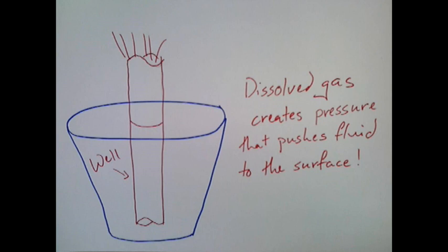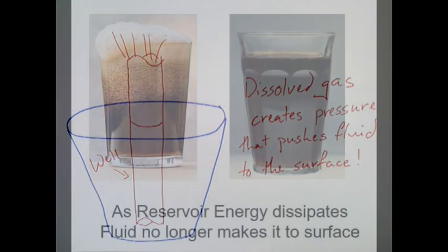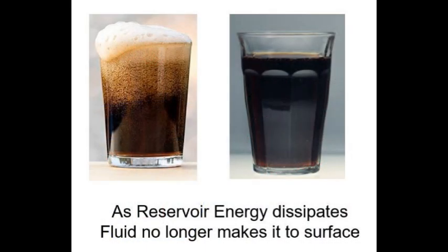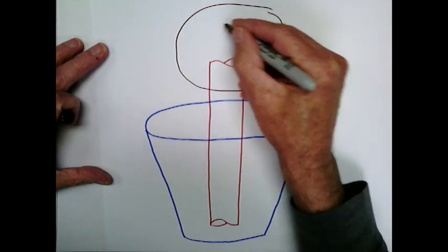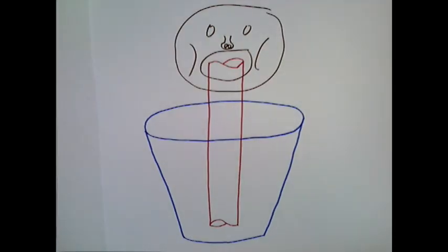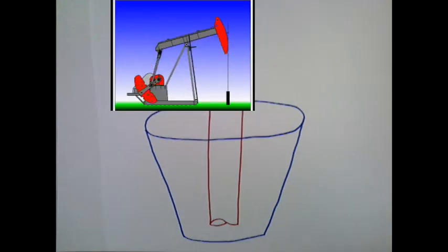Crude oil has the same reservoir energy in the form of dissolved methane and ethane, which when given the chance, convert to the gas phase and push the oil up the well bore. However, as that pressure quickly dissipates, pop no longer comes out of the straw and oil no longer comes to the surface in our well, so we have to add energy to the system. For our pop, that energy is us sucking on the straw. For our oil reservoir, that energy comes from a pumping unit that pulls the fluid to the surface.